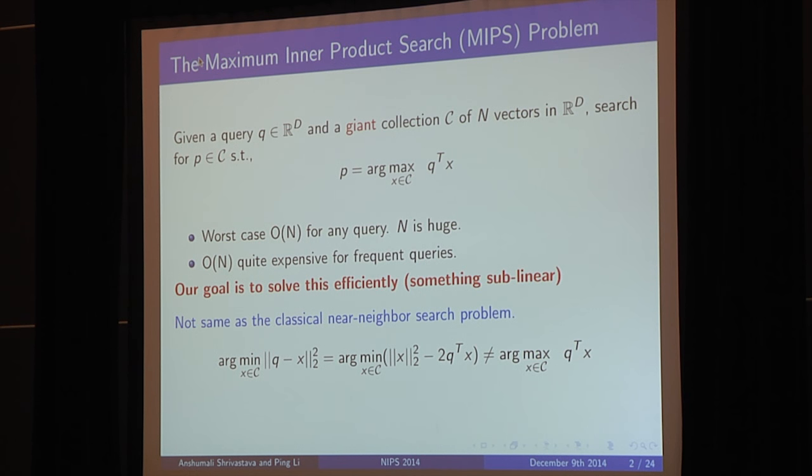But we will look into scenarios where querying is frequent and N is huge. And so this maximum inner product search, or MIPS problem, will become bottleneck step in many applications. And therefore, our goal is to solve this efficiently, and we are looking for something sublinear. And one thing to note that this is not same as the classical near-neighbor search problem if the norms of the element in the collection is varying.